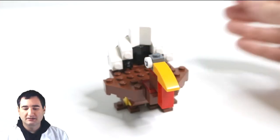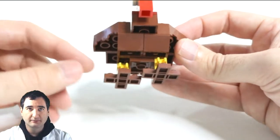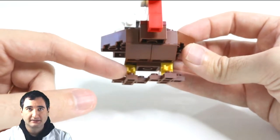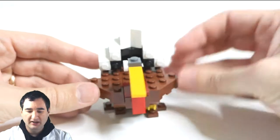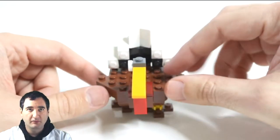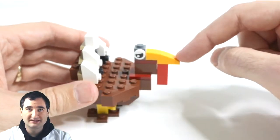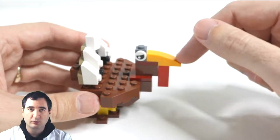So this is the turkey. A couple of the features are we have some little knobby knees for Tom the turkey, we have the feathers back here sticking straight up, and I went from a black color to the white color.